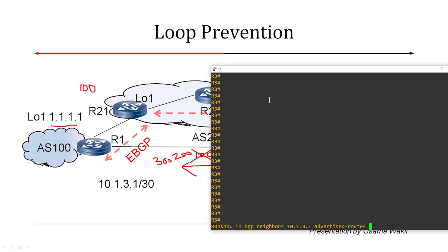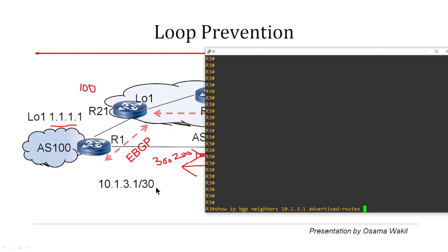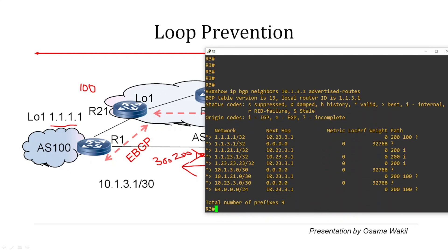Let's look at R3 and see what it is advertising to neighbor R1. The 10.1.3.1 is the neighbor IP address. Looking at the advertised routes, we do see that the network 1.1.1.1/32 is being advertised, and the AS path shown is 200 100 — as we were discussing on the presentation slide.